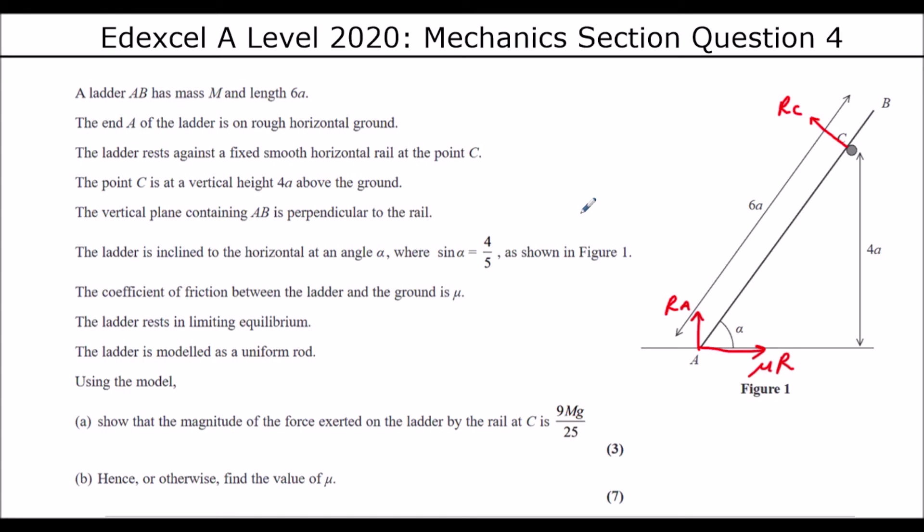The mass of the rod is going to be straight down the middle, so vertically down, and the weight, so it's mass times gravity, mg. Then we've got this angle alpha. Let's try and work out where we've got this angle alpha.